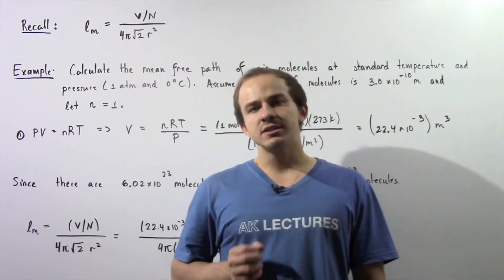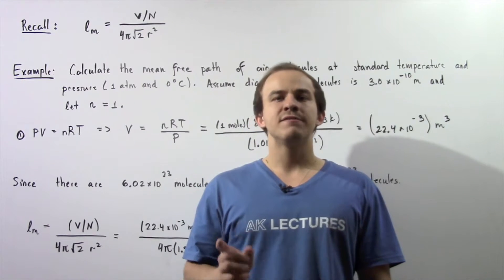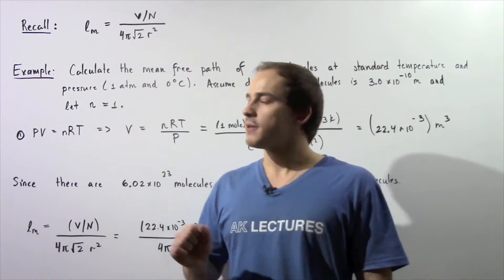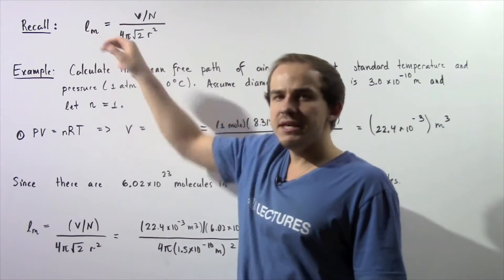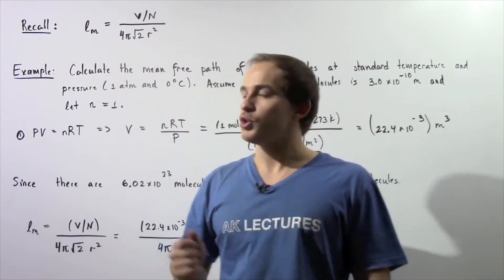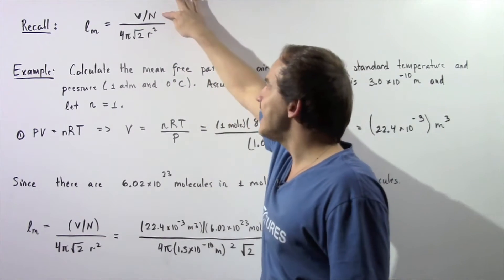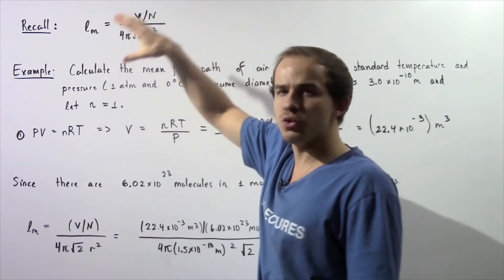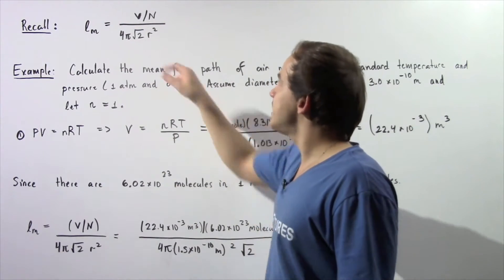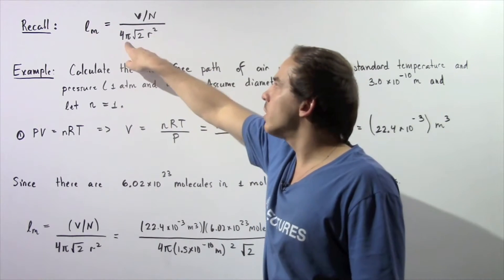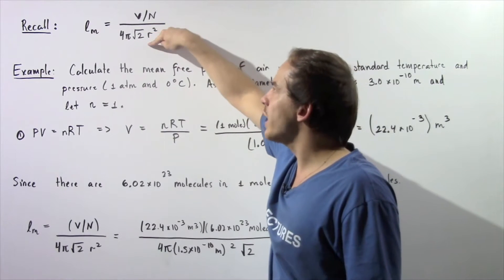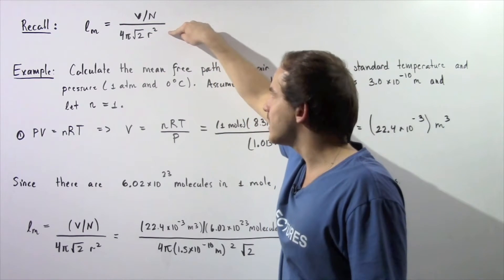In the previous lecture we were able to derive the equation for the mean free path. The mean free path is equal to the volume of our container divided by N, the total number of molecules within our container, divided by 4π√2 multiplied by the radius of the molecule squared.